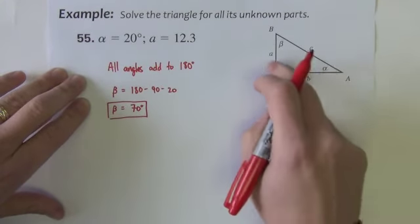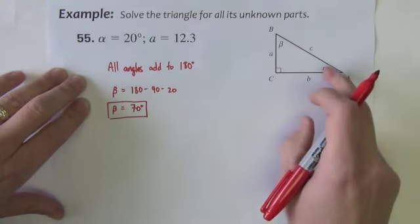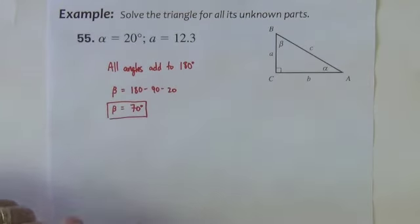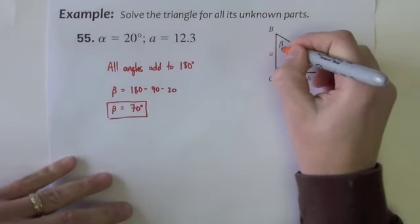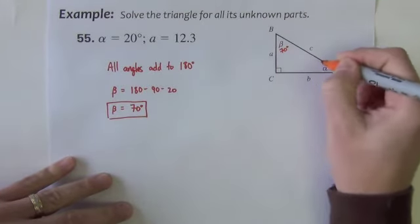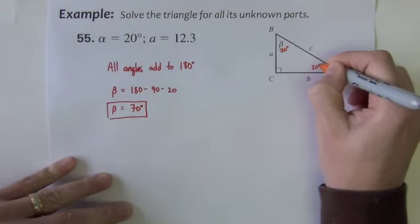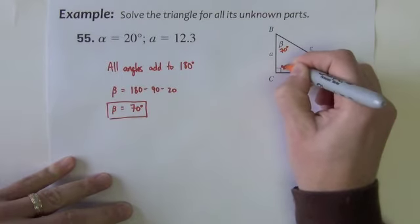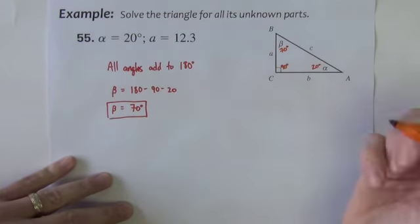Okay I've got all three angles known and if you want I mean you can it might help even just kind of write them in the triangle then you know once everything's written they're all done. So this is 70. This is 20. This one is of course 90. All three angles found.